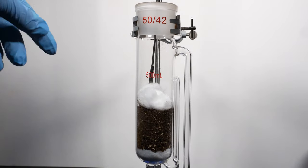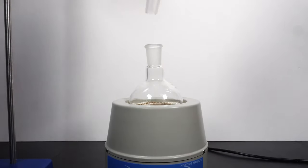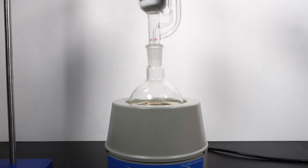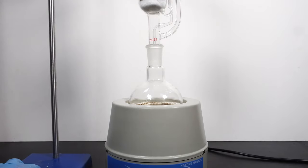The next thing we need to do is fill our round bottom flask with solvent, add in a stir bar, and assemble the Soxhlet extractor. From here, we will turn on the stirring and heating and wait for everything to heat up.